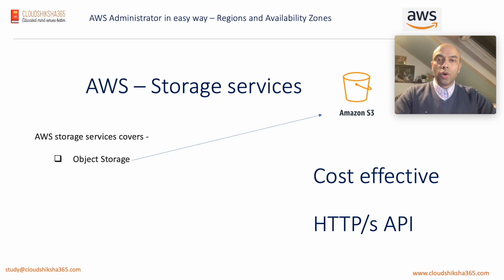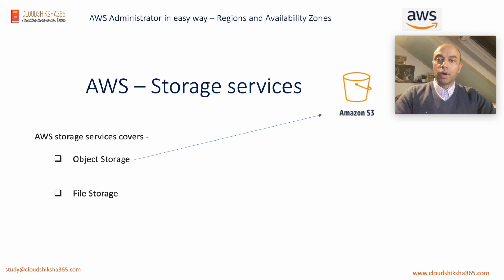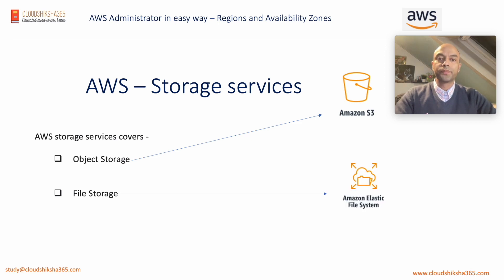The next type of storage service is file storage. As the name suggests, file storage is the type of storage that is presented as a file system to your instances and services for you to utilize. Amazon Elastic File System (EFS) is the best example of file storage.